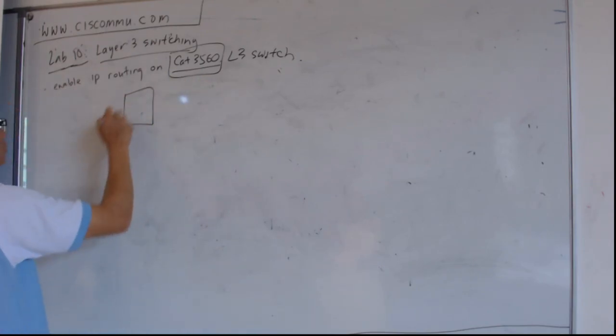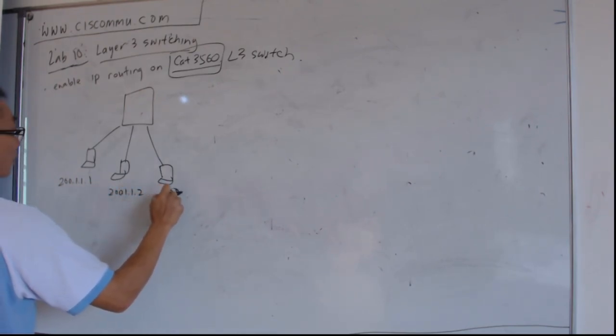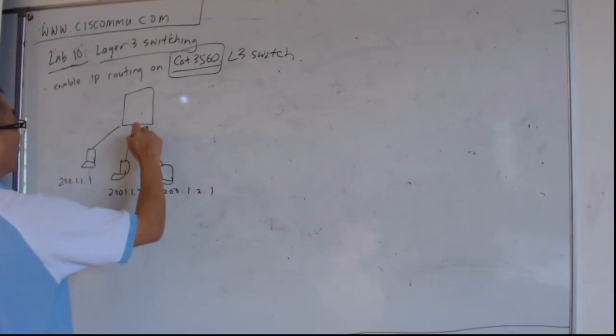So you have two interfaces. Let's say, okay, so this will be 200.1.1.1. FA0/1, FA0/2, FA0/2.